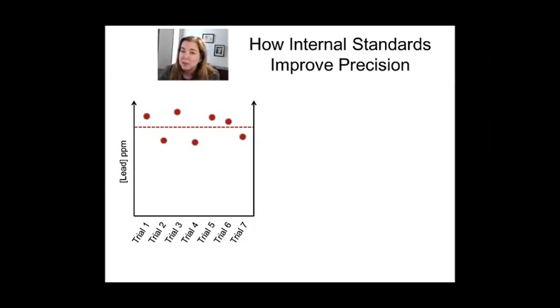It turns out, imagine we can do multi-element detection on the AAS, which you can if you have another arm to it. Some instruments do. And you can measure copper that was present in your samples at the exact same time.